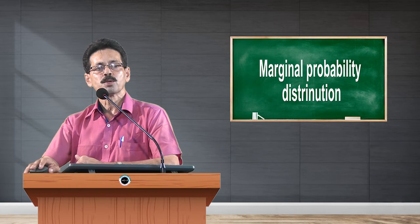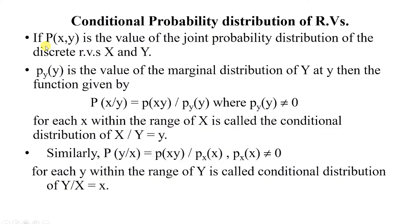Next, conditional probability distribution of random variables. If p(x,y) is the value of the joint probability distribution of the discrete random variables x and y, and p(y) is the value of the marginal distribution of y at y, then the conditional distribution of x given y is given by p(x|y), which is equal to p(x,y) divided by p(y), where p(y) is not equal to 0.